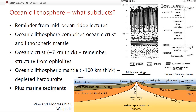What are we actually subducting? The oceanic lithosphere comprises oceanic crust — about six to eight kilometers thick — with a layer of sediments, pillow basalts, a sheeted dike complex, mafic cumulate rocks mainly gabbros, and ultramafic cumulates underneath. Below the oceanic crust is oceanic lithospheric mantle, which once the lithosphere is fairly old is about 100 kilometers thick — similar to what we discussed under Hawaii. As the crust gets older we'll have more and more marine sediment on top.